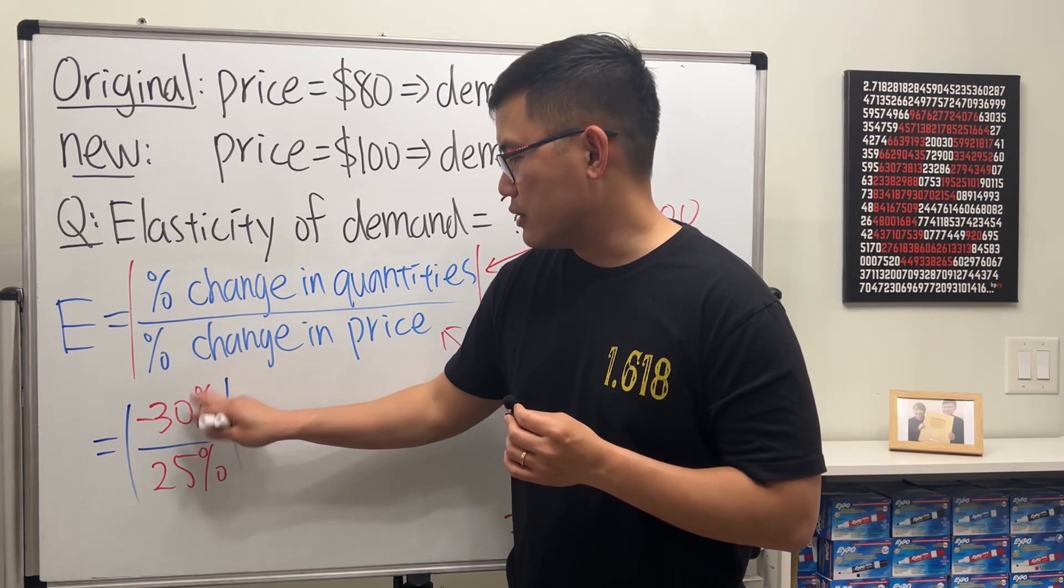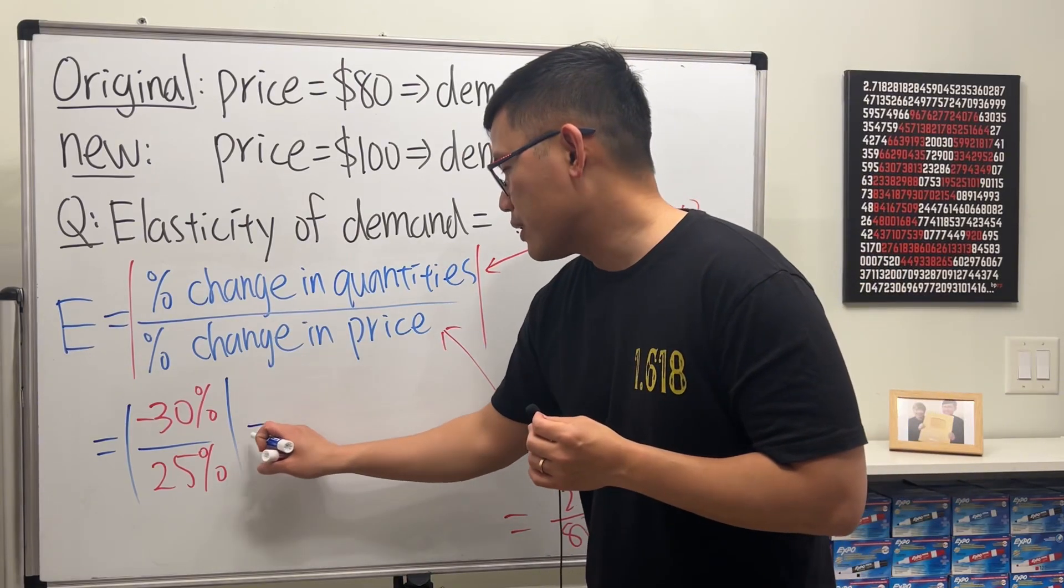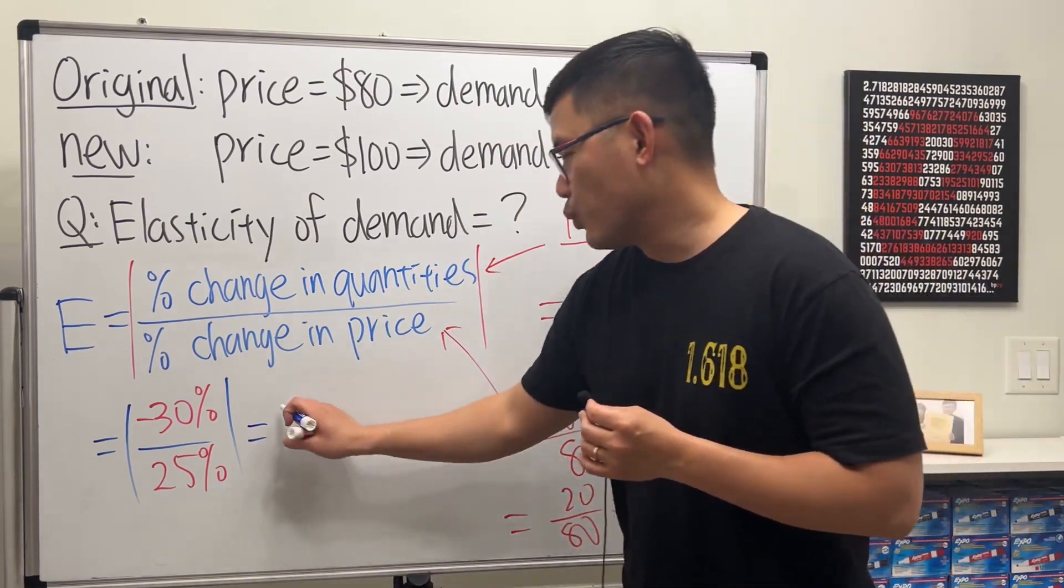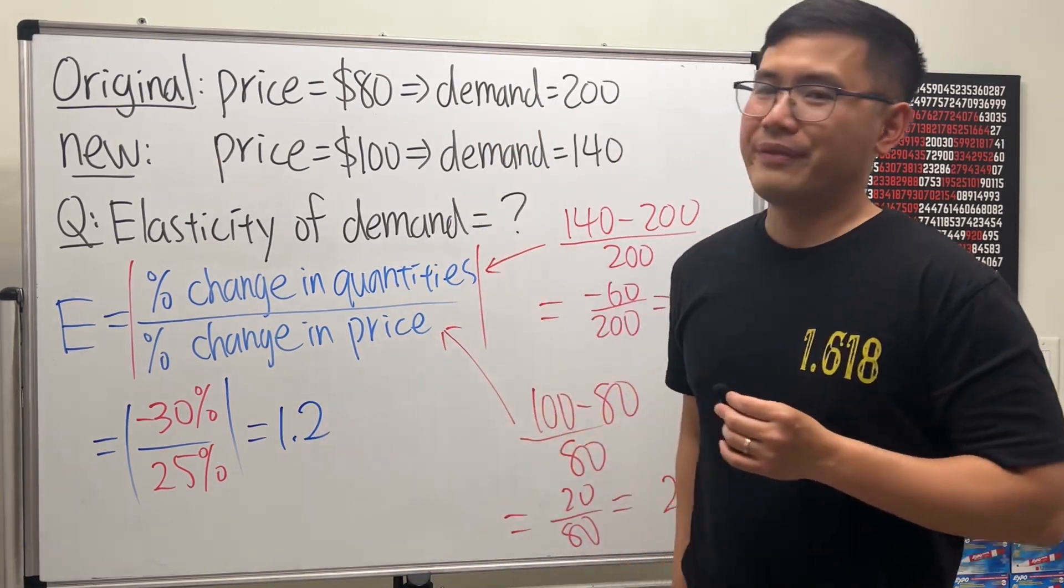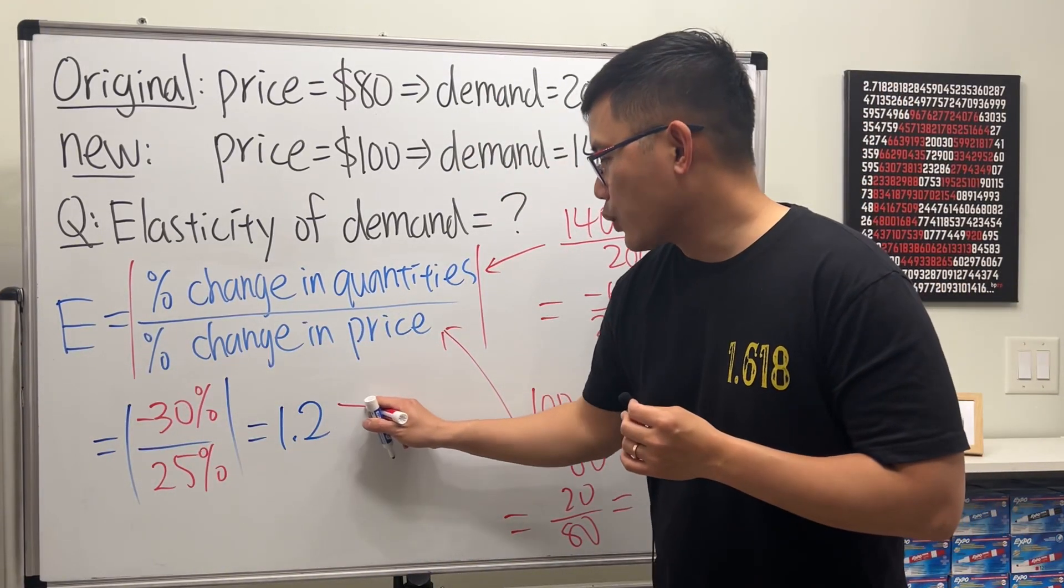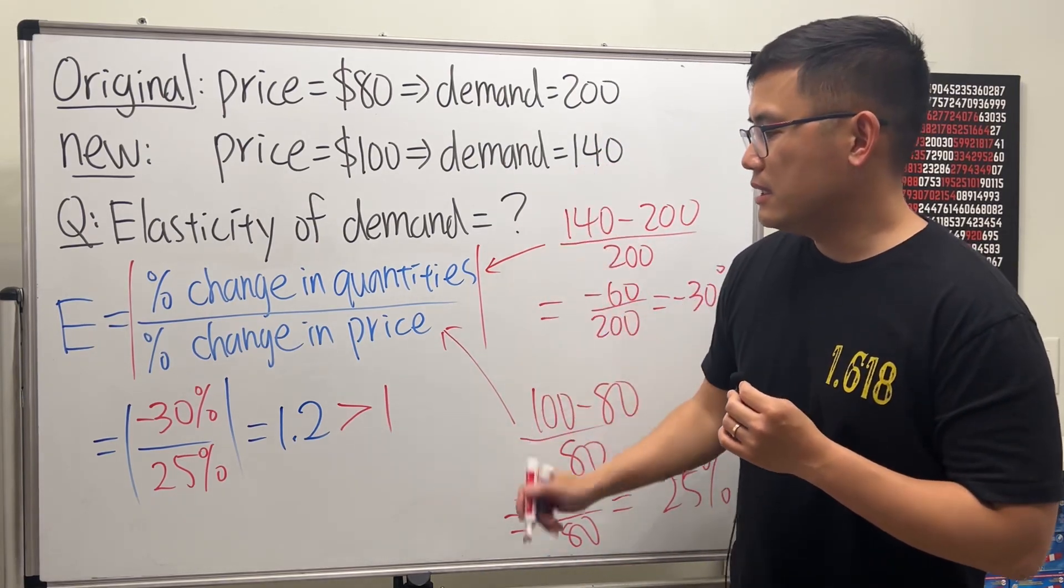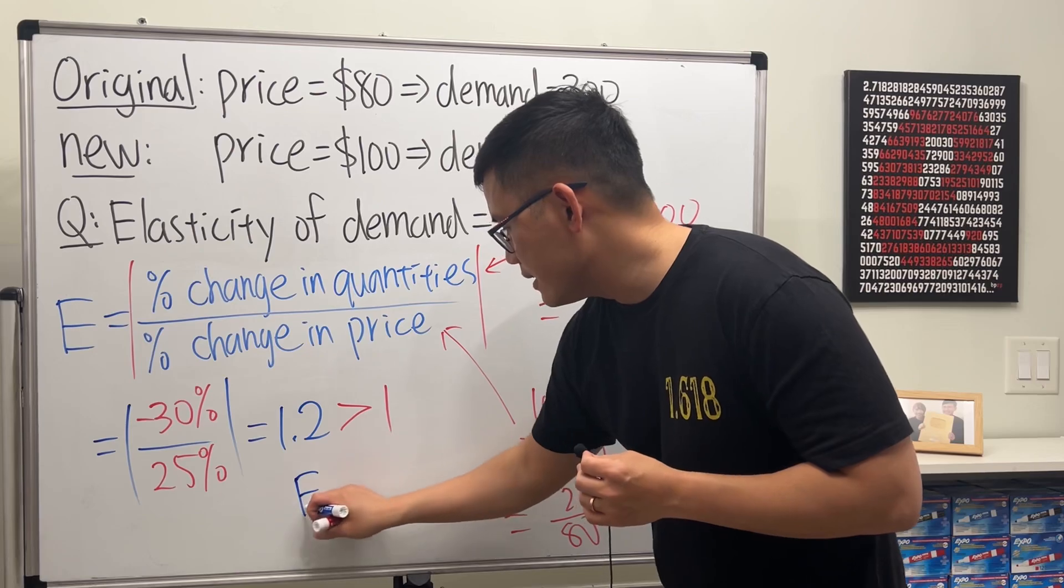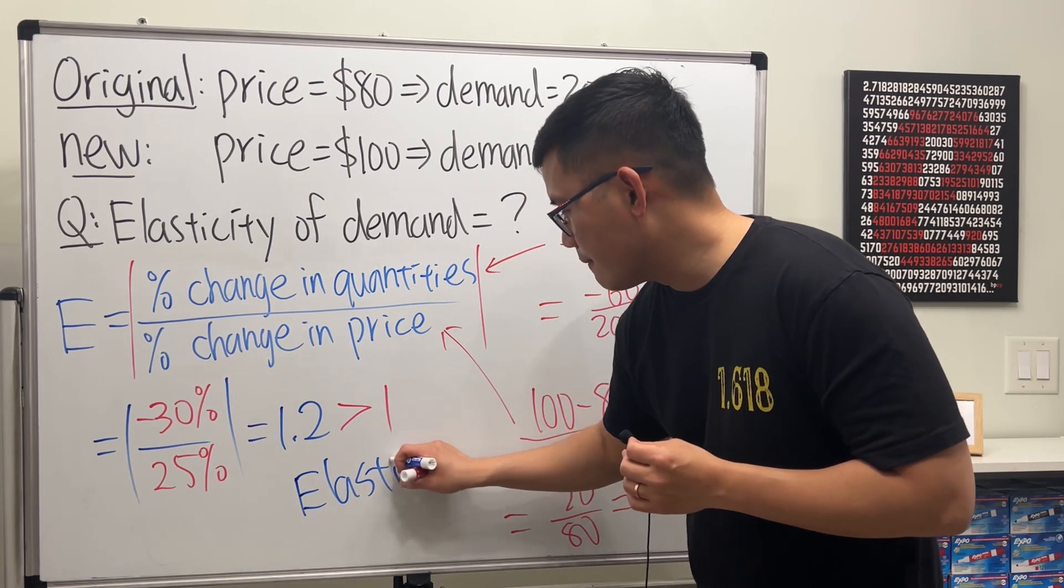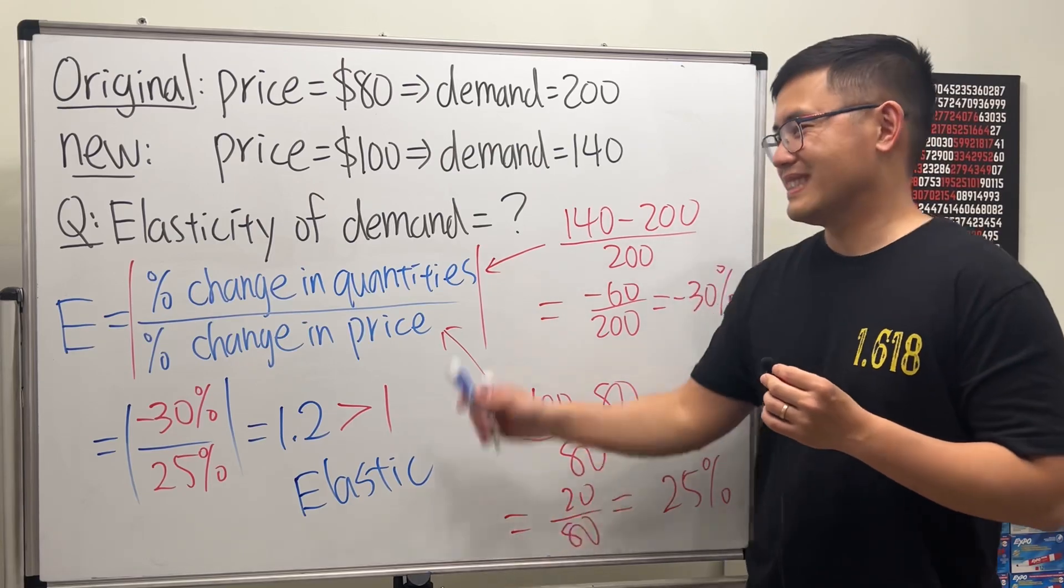Then the absolute value makes the negative positive, and also the percentages just cancel. You can just do 30 divided by 25, work that out on your calculator, and you end up with 1.2. So E is equal to 1.2, which is greater than 1. So in this situation we say this is elastic. Hopefully you guys find this interesting.